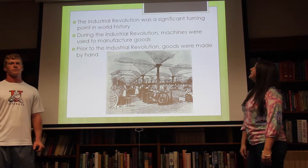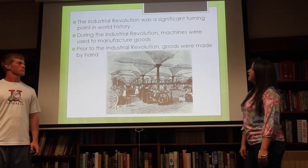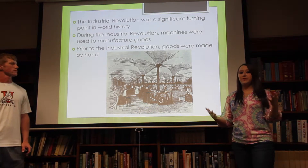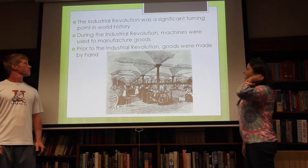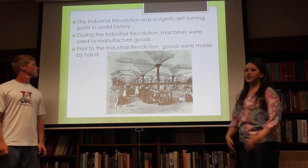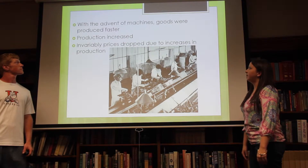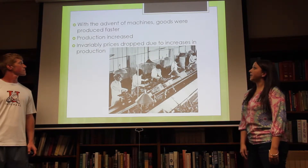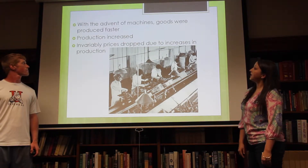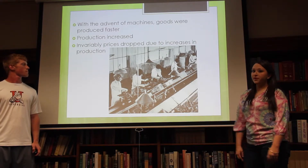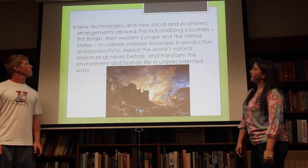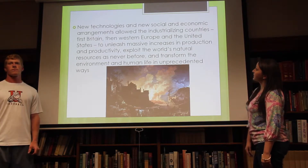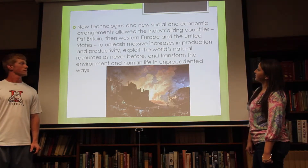The Industrial Revolution was a significant turning point in world history. During this revolution, machines were used to manufacture goods. Prior to the revolution, goods were made by hand. With the advent of machines, goods were produced faster. This made production increase and prices dropped due to the increase in production. These new technologies and new socioeconomic arrangements allowed industrializing countries.